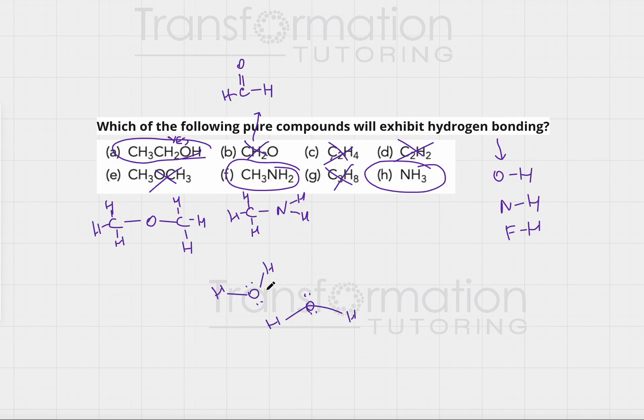What happens in water is that oxygen is much, much more electronegative than the hydrogen. So, oxygen will have a partially negative charge and hydrogens will have a partially positive charge. Let's go ahead and show it. Negative, partially negative, partially positive.